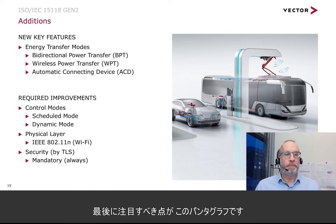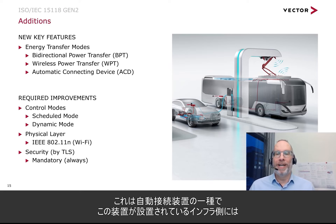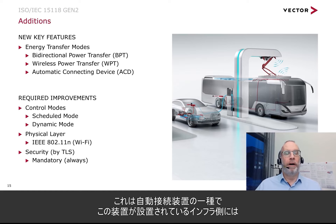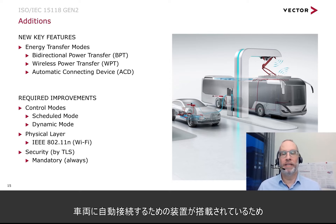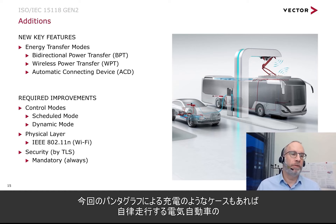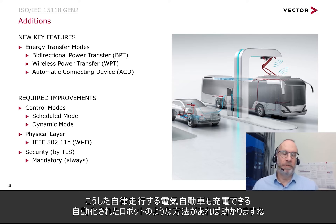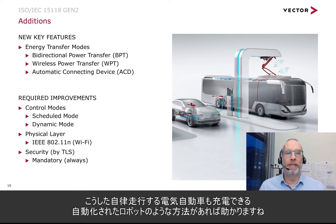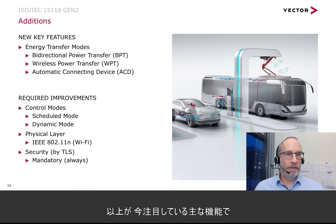Last but not least, there is the pantograph — one kind of automatic connecting device where a part on the infrastructure side is able to automatically connect to the vehicle. Special sequences are needed for this. This could be pantograph charging, or it could also apply to autonomous electric vehicles that are just driving around and need to be charged via some automatic robotic method. These are the main aspects we are focusing on.